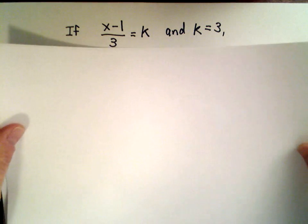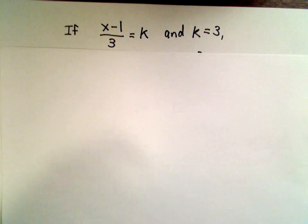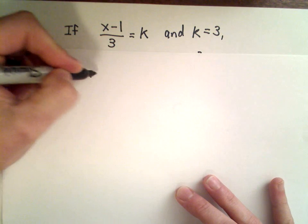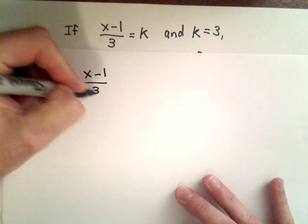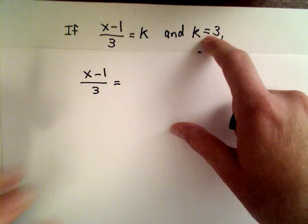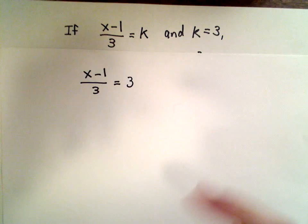So this is just a basic linear equation. We have (x - 1)/3 equals, well they give us k equals 3, so we can substitute that in.